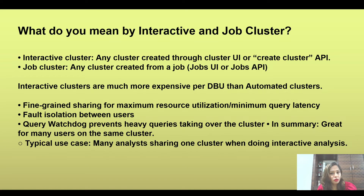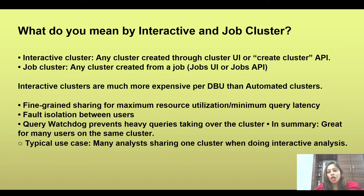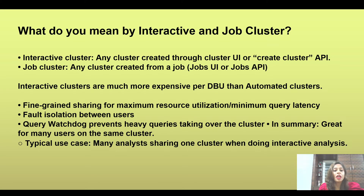For any production workload where you want to schedule a job, a job cluster is recommended. When that job is scheduled, the cluster automatically provisions machines, does the job, and then terminates. Job clusters are not shared between jobs. With interactive clusters, if you use a high-concurrency cluster, they can be shared and you can run multiple jobs on the same cluster.